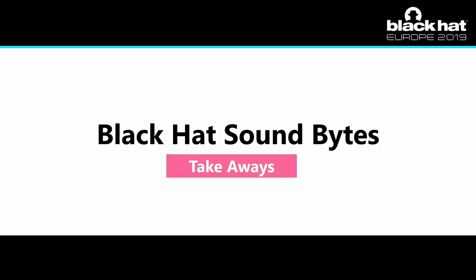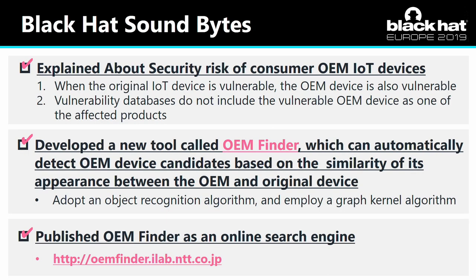Now let's move on to the takeaways. To conclude the talk, I summarize today's takeaways. First, I explained the security risk of consumer OEM IoT devices — generally, when the original IoT device is vulnerable, the OEM device is also vulnerable, and vulnerability databases such as NVD do not include or announce vulnerable OEM devices as one of the affected products. Second, to solve that issue, I developed a new tool called OEM Finder, which can automatically detect OEM device candidates based on the similarity of appearance between the OEM and the original device.